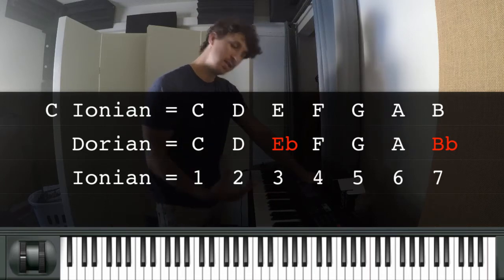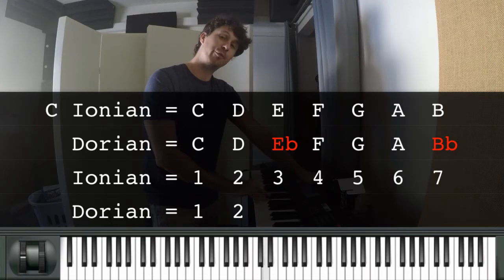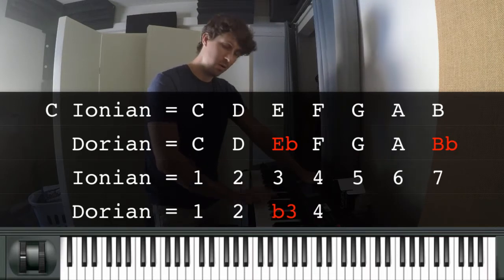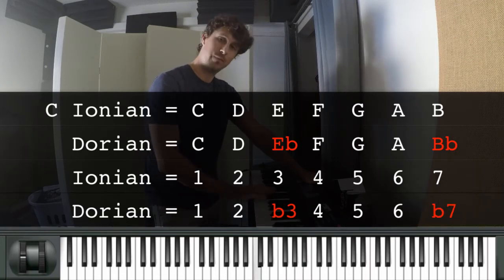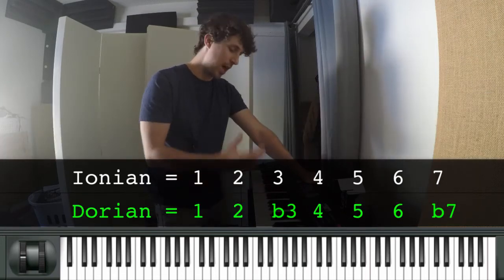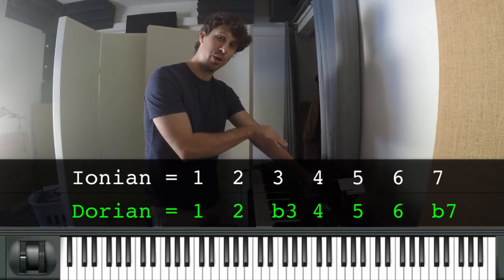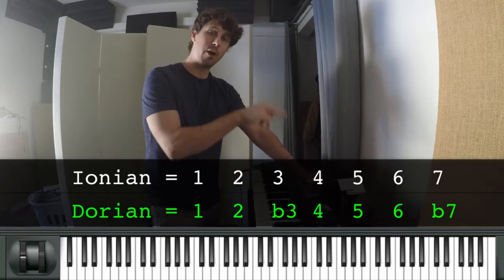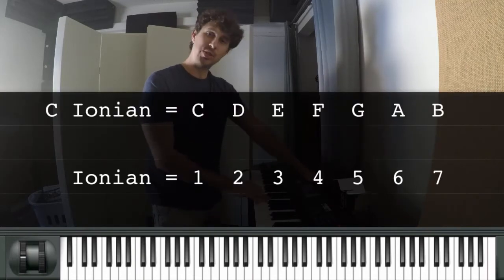Comparing C Dorian against C Ionian: we have one, two, but then a flat three. We have four, five, six, and then a flat seven. So Dorian is defined as: one, two, flat three, four, five, six, flat seven.